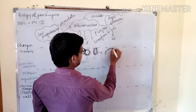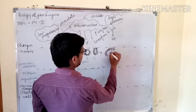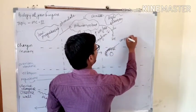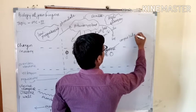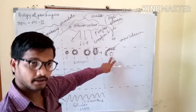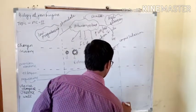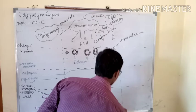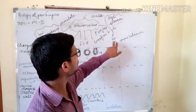The Graafian follicle is rupturing and releases the secondary oocyte. The remaining structure is known as the corpus luteum. The egg is released — that's why this is known as ovulation. Ovulation takes place under the influence of LH hormone, so here the level of LH hormone is very high.